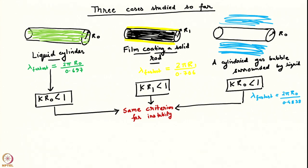For a liquid cylinder of radius R₀ in the base state, modes which satisfy kR₀ < 1 were seen to be unstable. For a solid rod with a thin film coating, the criteria was kR₁ < 1, where R₁ is the radius of the free surface. For the cylindrical bubble, it was again kR₀ < 1, where R₀ is the bubble radius in the base state.